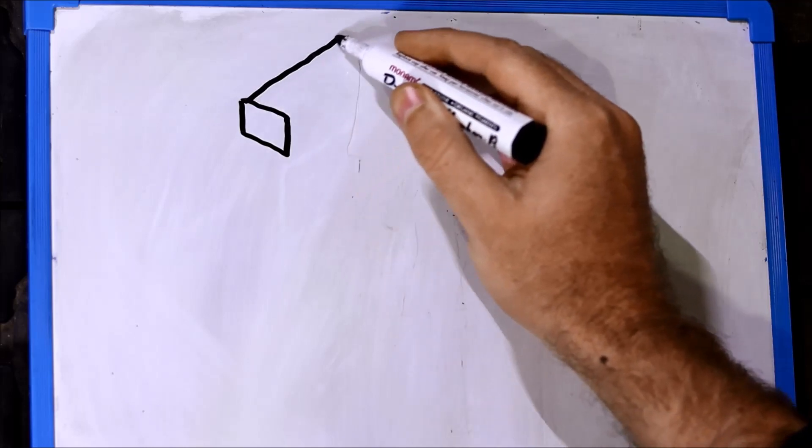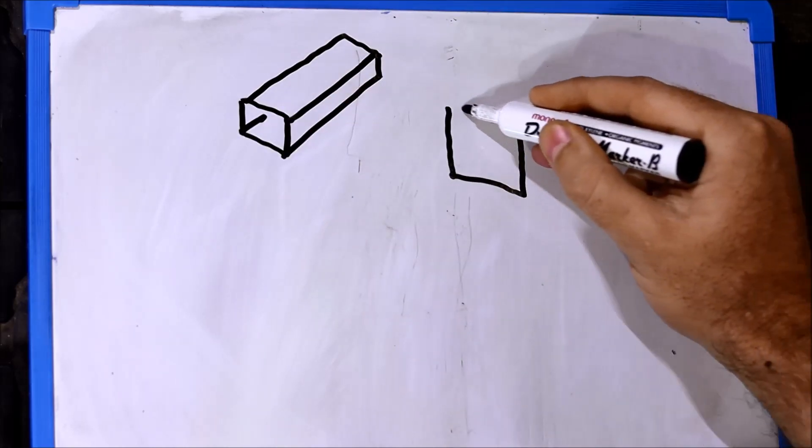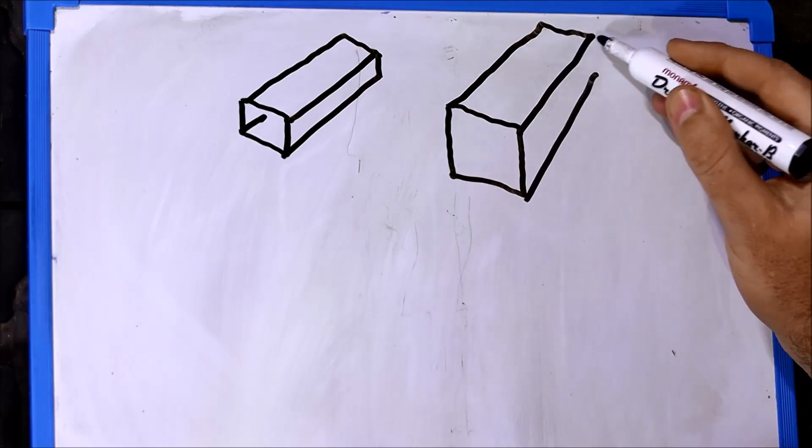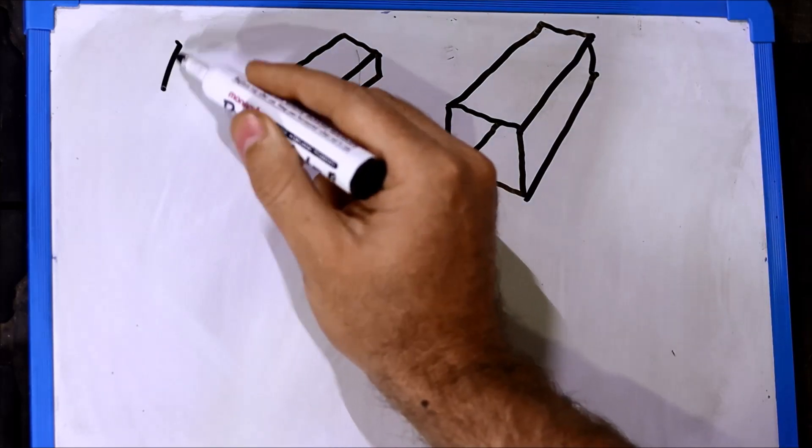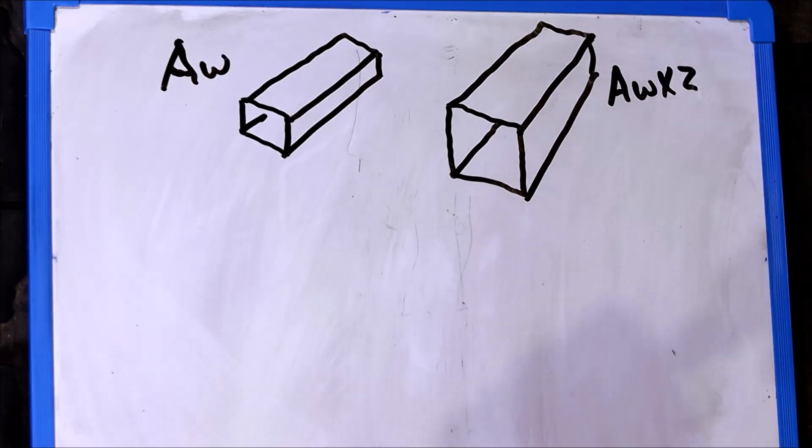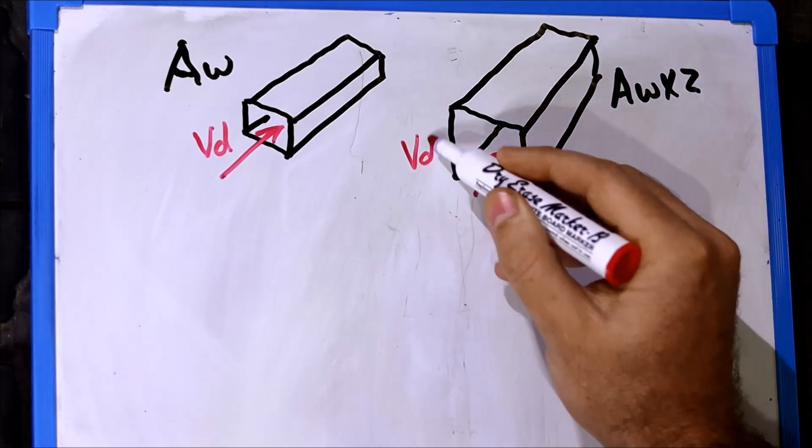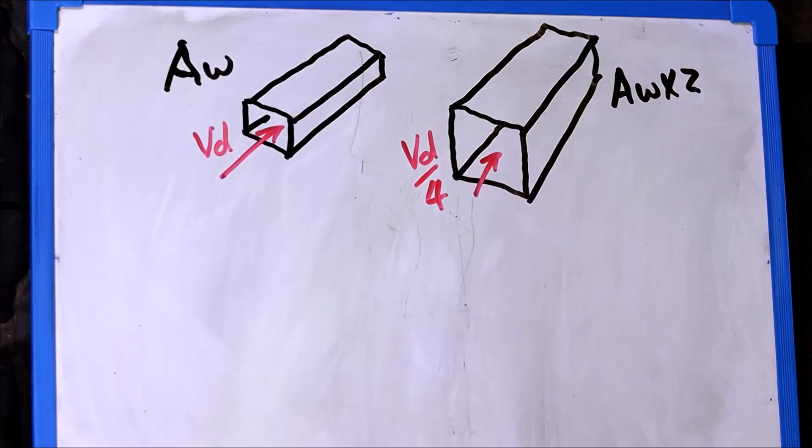If the width and height of a square duct are both doubled, then the internal surface area exposed to friction will also double. That is of course if the length is kept the same. The cross-sectional area, however, will quadruple, and the required duct velocity will be a quarter of what it was before.